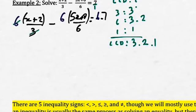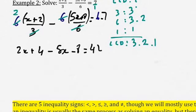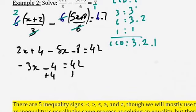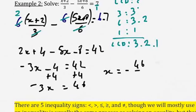6 divided by 3 gives me 2, and 6 divided by 6 gives me 1, and on the right side I have 42. So I'm going to have 2x plus 4 minus 5x minus 8 equal 42. That gives me minus 3x minus 4 equal 42. Adding 4 to both sides gives minus 3x equal 46, and so x is going to be equal to negative 46 divided by 3.